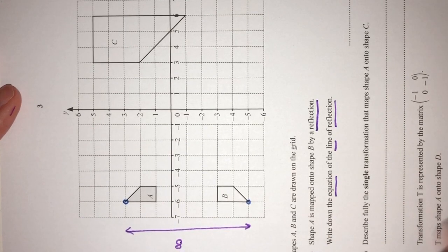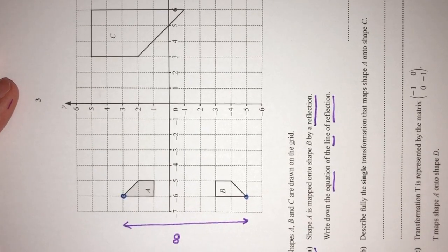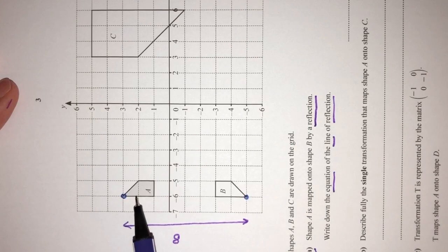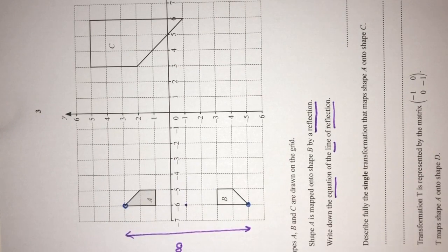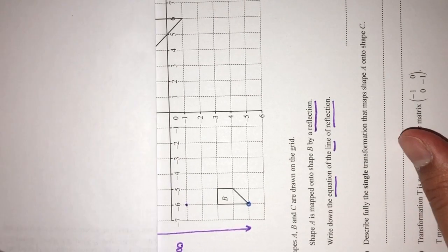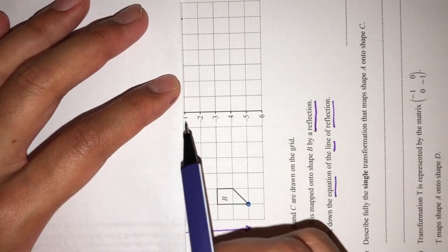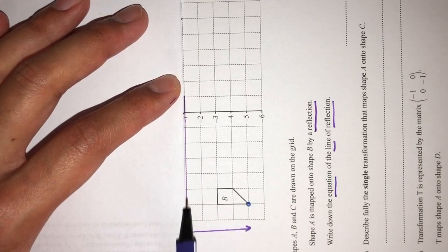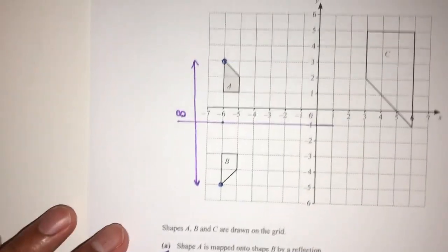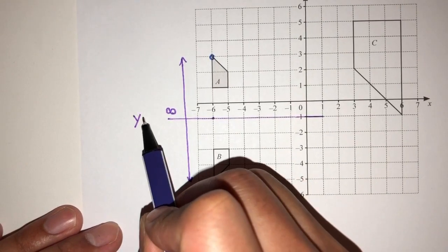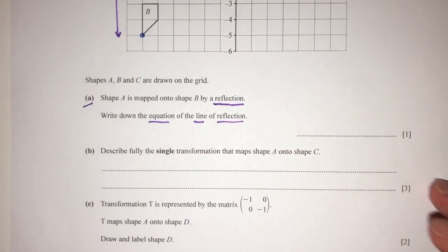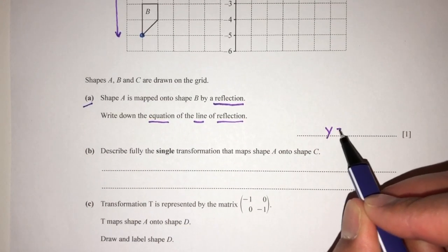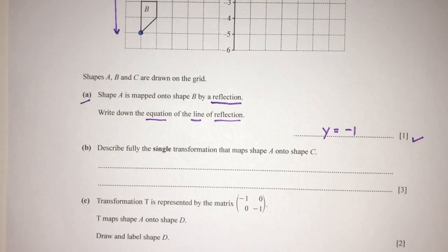To find the line of reflection, it has to be exactly in between. So 8 divided by 2 is 4. We count 1, 2, 3, 4. As you can see, the line has to pass through this point, and it only makes sense if the line will be this line. So this line will be your line of reflection, y = -1. That is your answer for part A. The line will be y = -1. It is only for 1 mark, so it should be pretty easy.